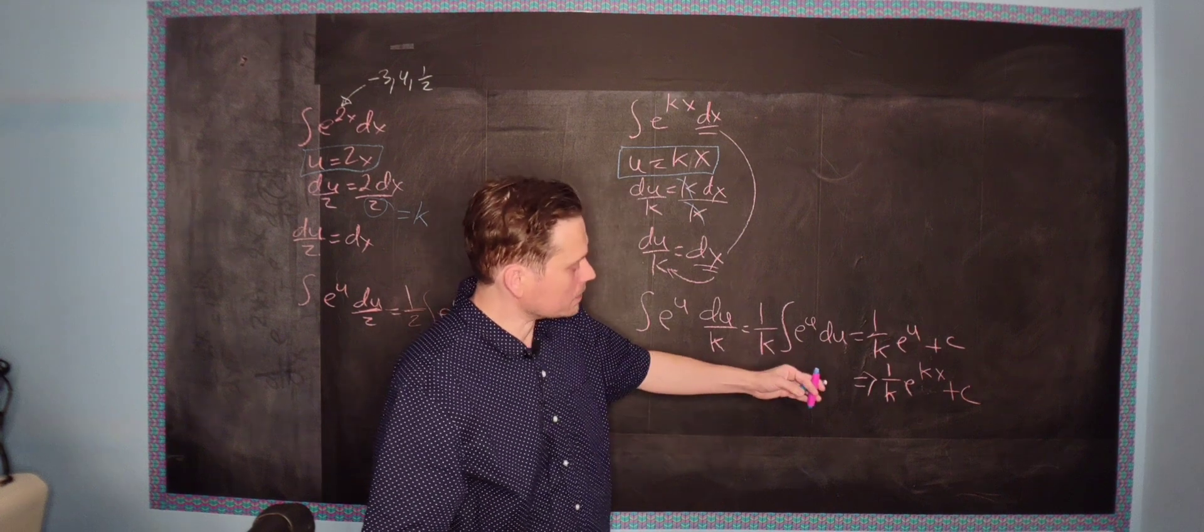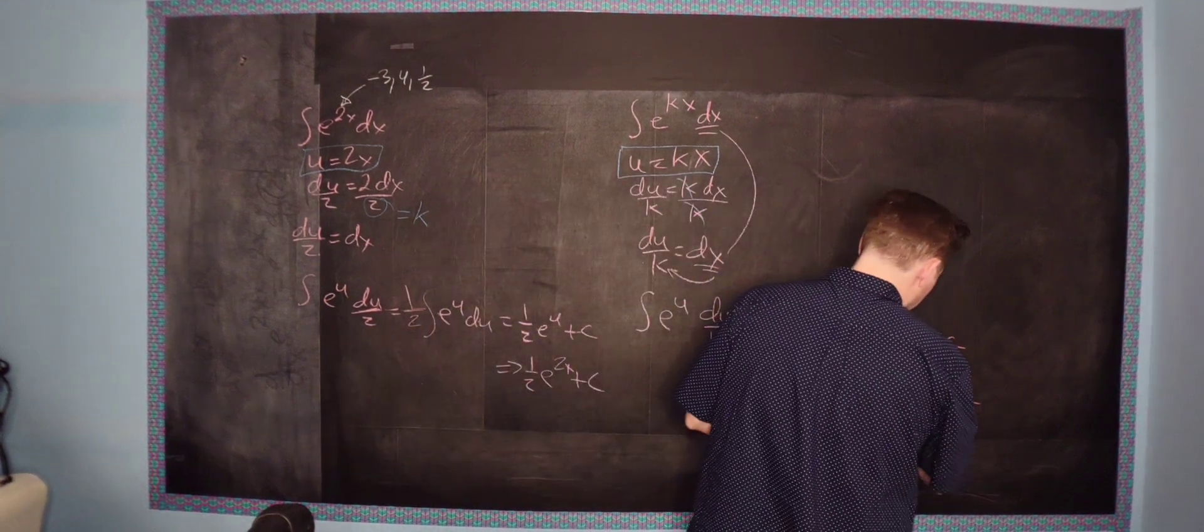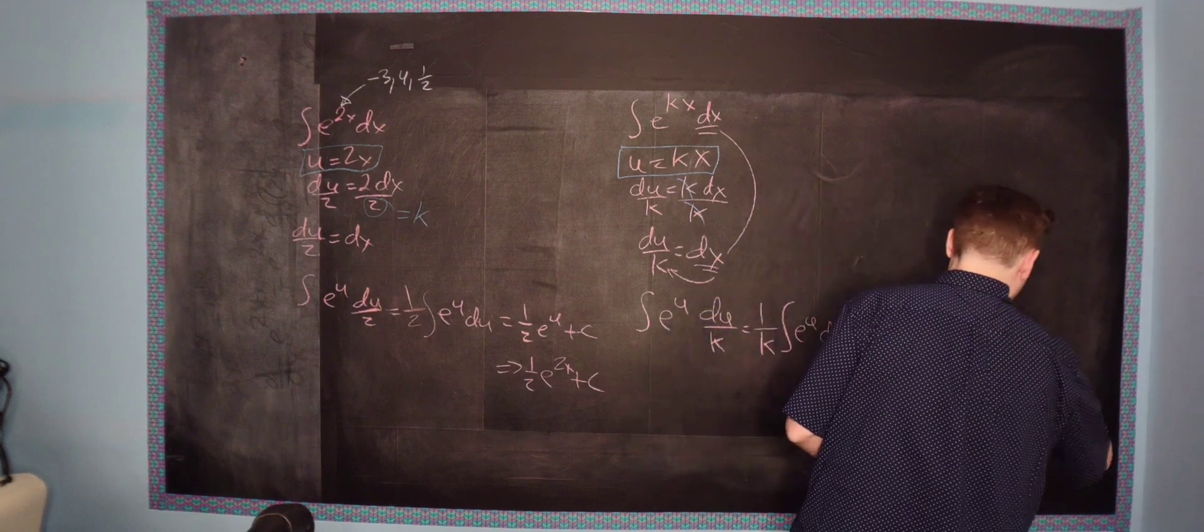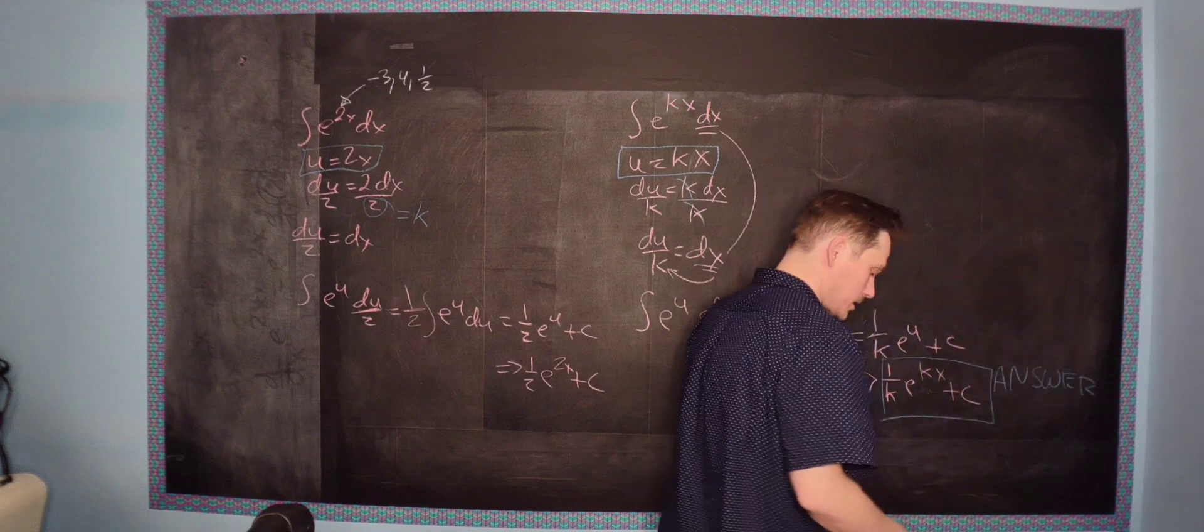1 over k e to the kx plus c. There you go. So 1 over k times e to the kx plus c. And then this is the answer in a general format right here. This is the answer.